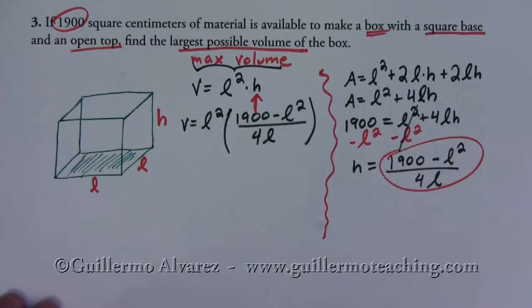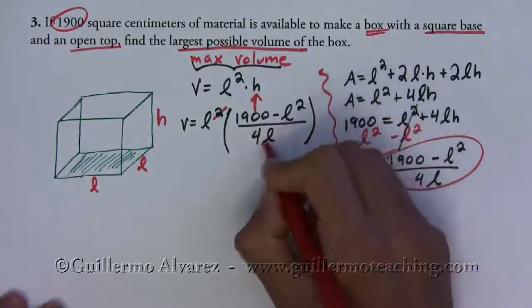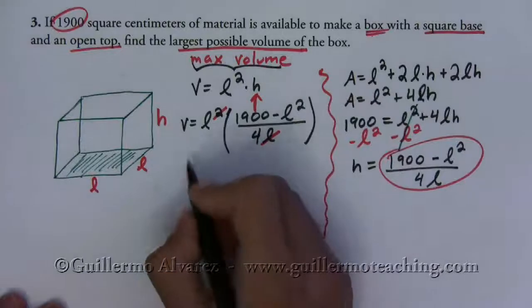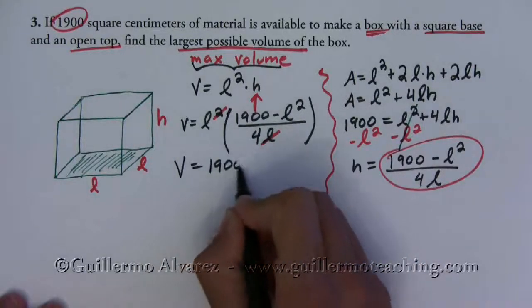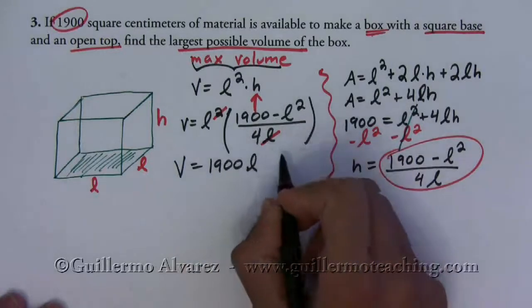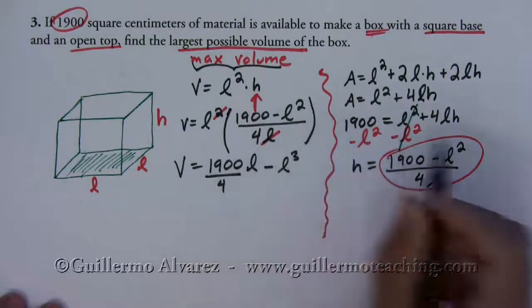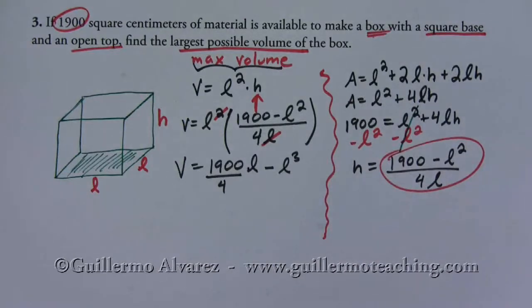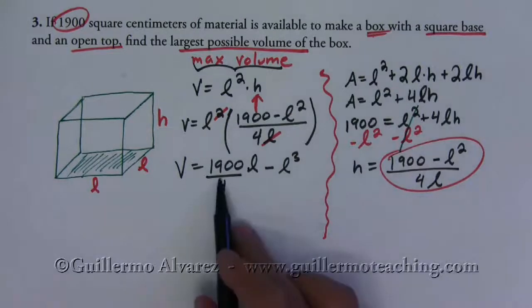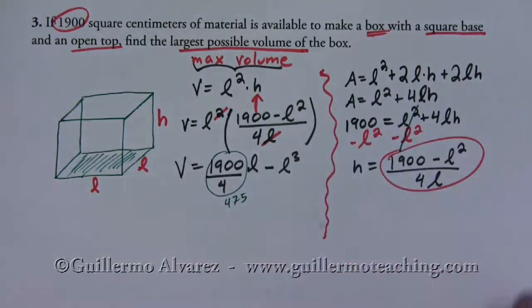So before I find the derivative and critical points and all that stuff, notice that one of these l's on top can cancel. So I get v equals, if I distribute, 1900 over 4 l minus l cubed over 4. And then 1900 over 4 is 475. So let's just keep that in mind.